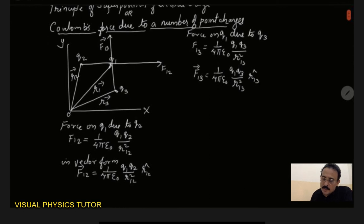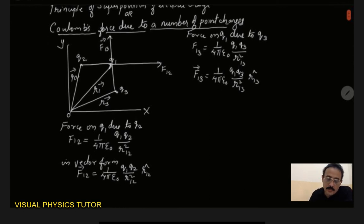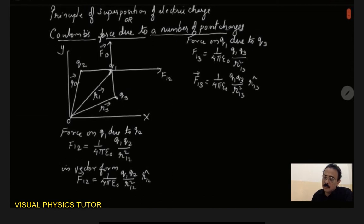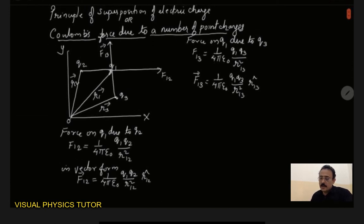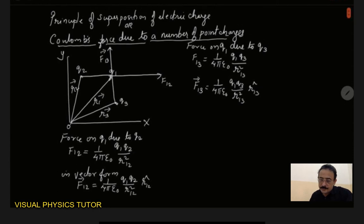So now you can see that here to find the resultant of these two vectors, that means on q1 what is the total force acting, we can apply the parallelogram law of vectors. So I can draw a resultant here. So the resultant will go this way. Now I can join this over here and I can join this over here.